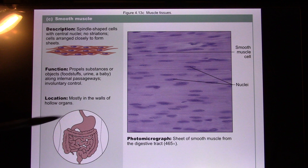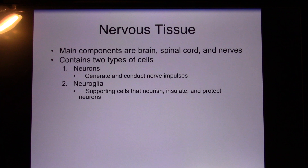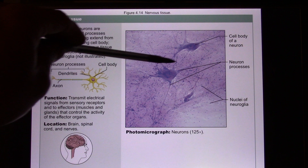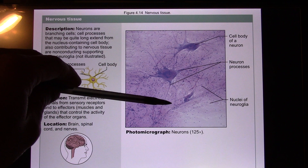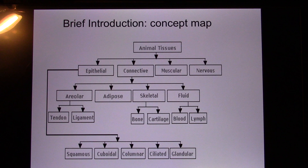The last tissue type is nervous tissue. You have two kinds of cells: neurons and neuroglial cells. Neurons have a star shape, generate electrical signals, and form neural networks with other neurons. The small dots are glial cells — there are actually ten times more glial cells than neurons. These are all the tissue types you need to memorize.